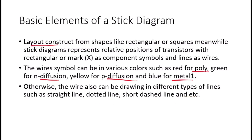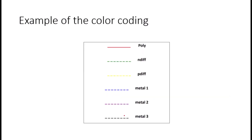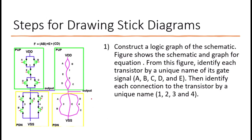Here's a quick look at how each layer is represented. Polysilicon in red connects the gates of transistors. Diffusion in green forms the source and drain of nMOS transistors. P-diffusion in yellow does the same for pMOS transistors. Metal one in blue is used for interconnecting different parts of the circuit, including power and ground.